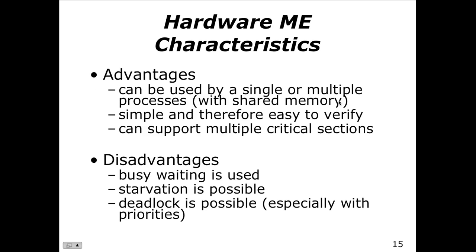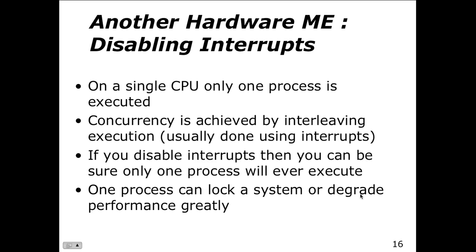Hardware mutual exclusion can be used by a single or multiple processes with shared memory, is simple and easy to verify, and can support multiple critical sections. However, busy waiting is still used even from a hardware perspective — we're still checking and waiting, not really getting anything done. Starvation is also possible with a long circular wait, and deadlock is possible too, especially with priorities, where one process might block another from running indefinitely.